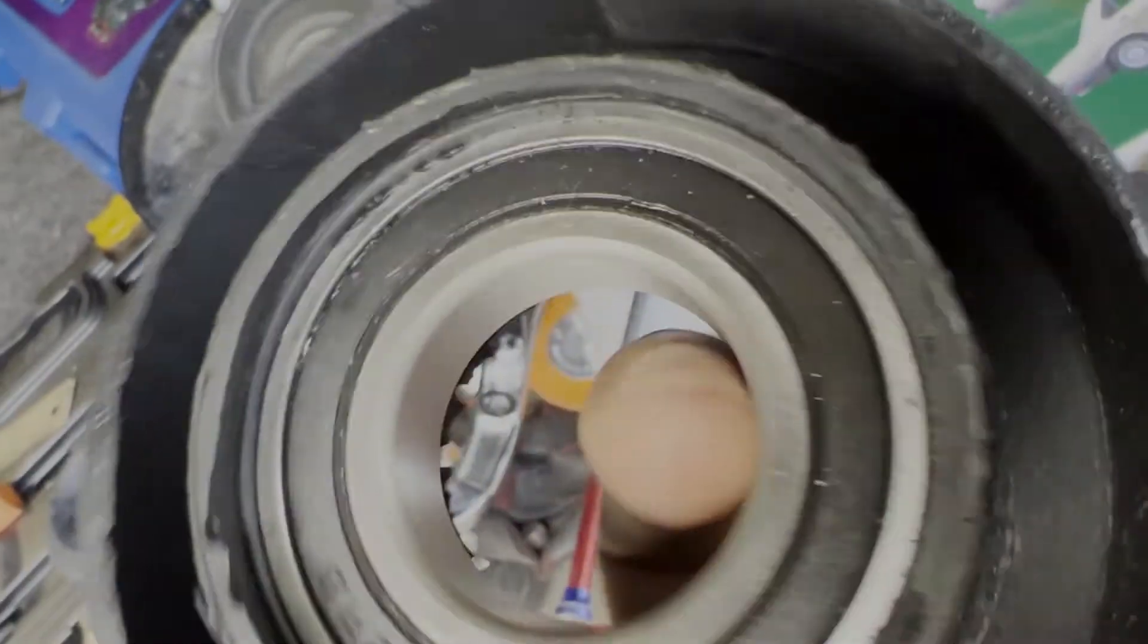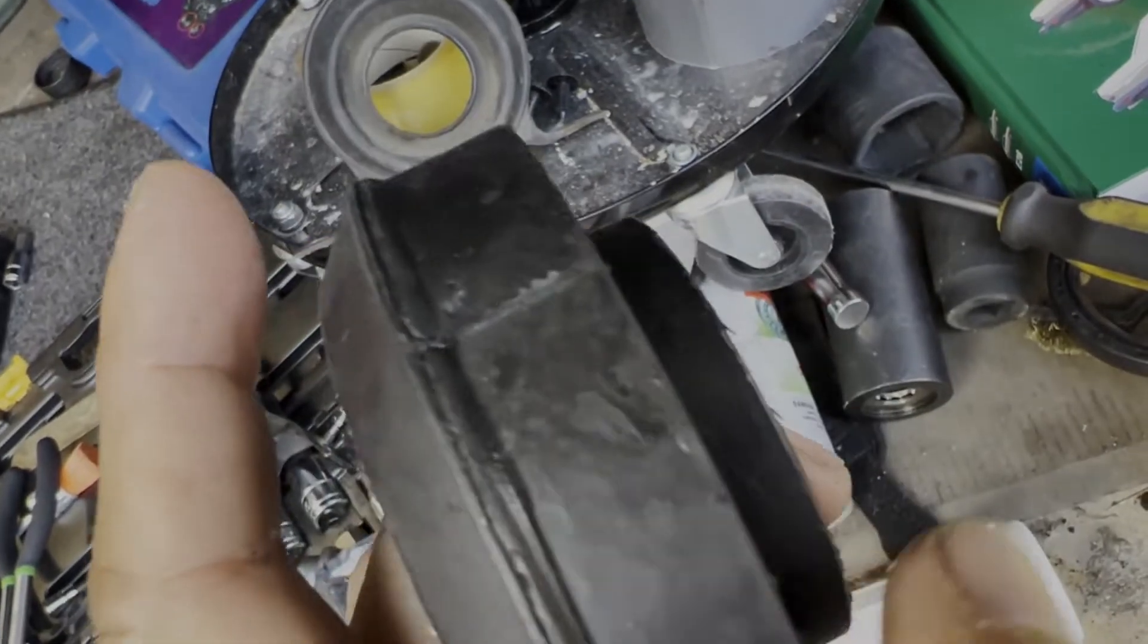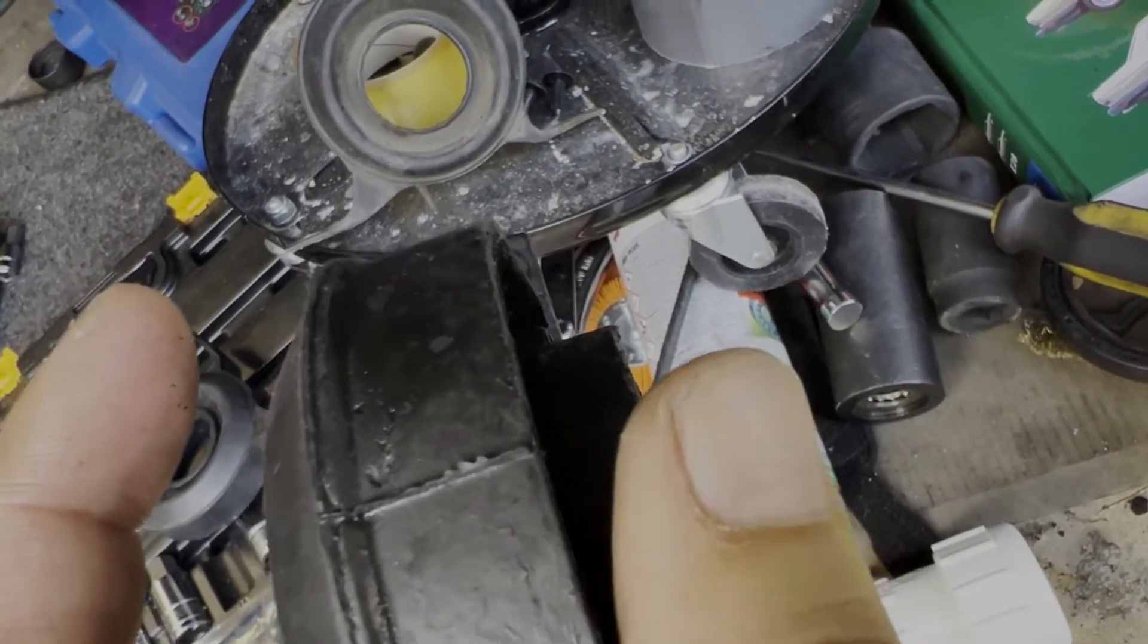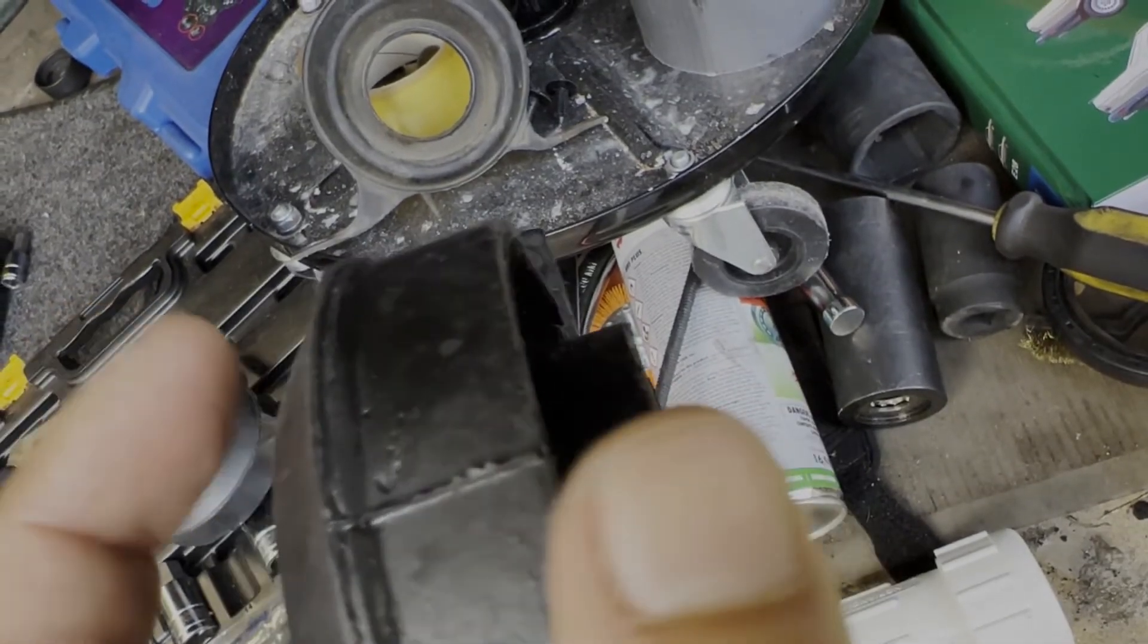So what happened was, as this thing was spinning like that, you could see one side was rubbing up against the dust cap and the other side was giving it a gap, so it would go like this.